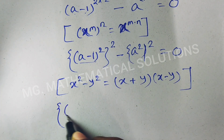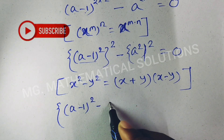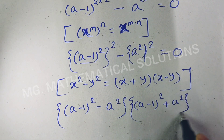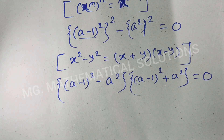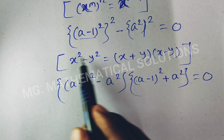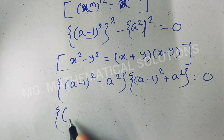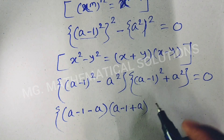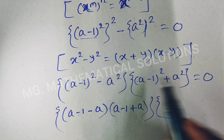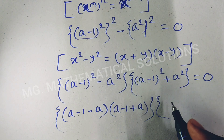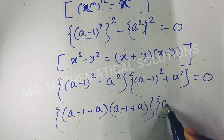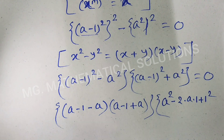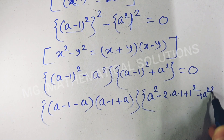So we get: [(a minus 1) whole square plus a square] times [(a minus 1) whole square minus a square] equal to 0. For the second factor, (a minus 1) whole square minus a square, we apply the same difference of squares formula, giving (a minus 1 plus a)(a minus 1 minus a). Now we expand (a minus 1) whole square using the a minus b whole square formula: a squared minus 2a plus 1.